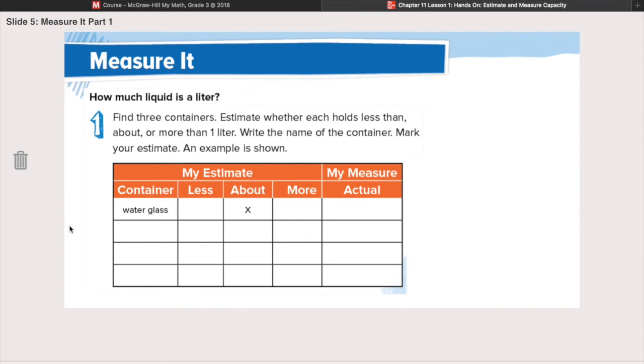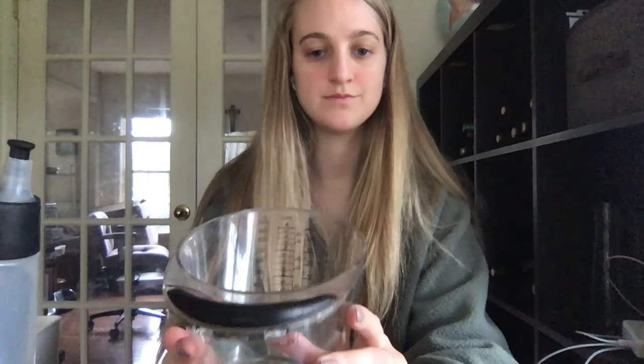What we're going to do today is we are going to find three containers, and we're going to estimate whether each container holds less than, about one liter, or more than one liter. We're going to estimate and then we're going to actually measure it to see. So if you want, I would encourage you to go find three containers in your house and you can do this with me. Pause this video here and go find three containers. You need three containers and water. You also need one four cup measuring cup.